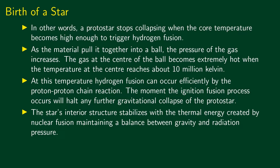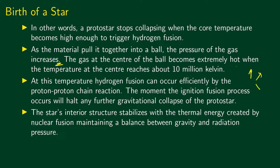The gravitational contraction is counteracted. As the material is pulled together into a ball, the pressure of the gas increases. The gas at the center of the ball becomes extremely hot when the temperature at the center reaches about 10 million Kelvin, triggering hydrogen fusion via the proton-proton chain reaction. The heat pressure balances the gravitational force. The star's interior structure stabilizes with thermal energy from nuclear fusion maintaining a balance between gravity and radiation pressure.